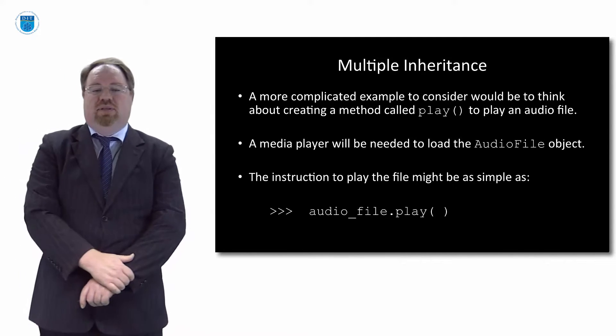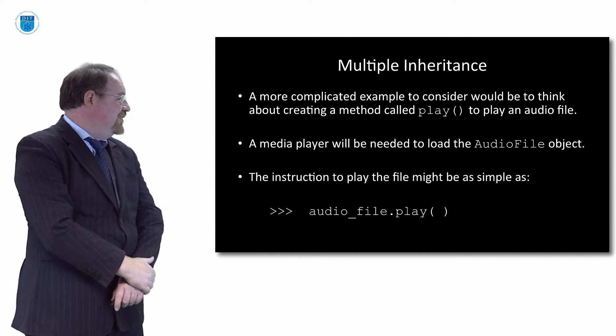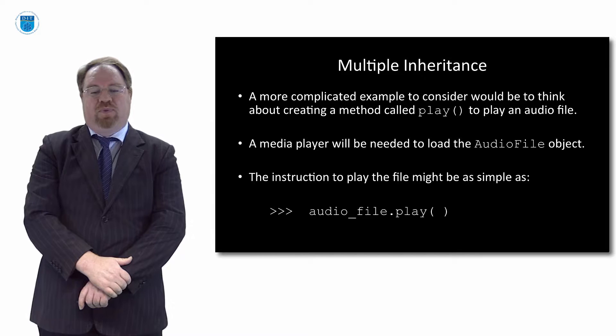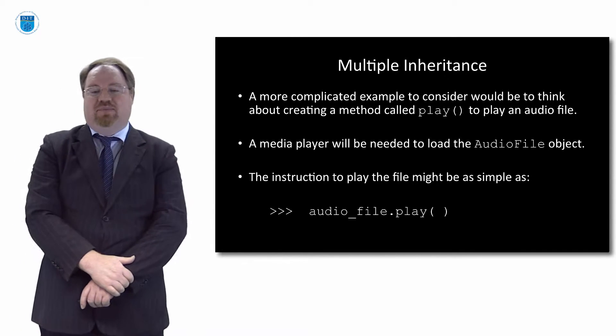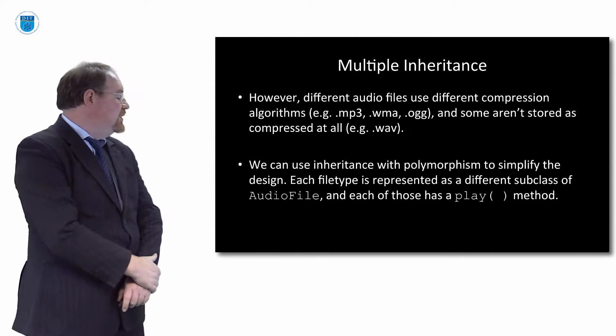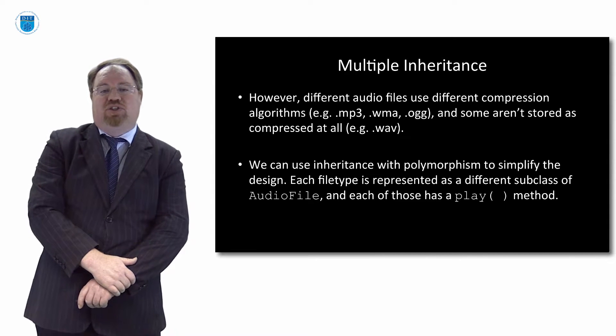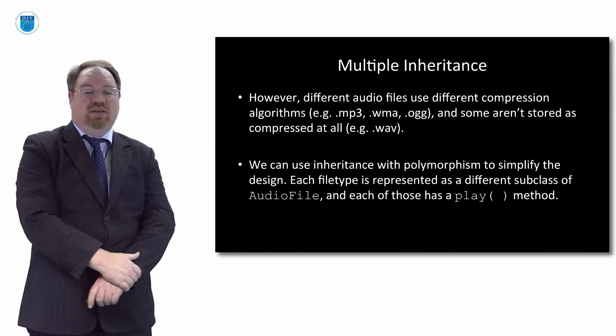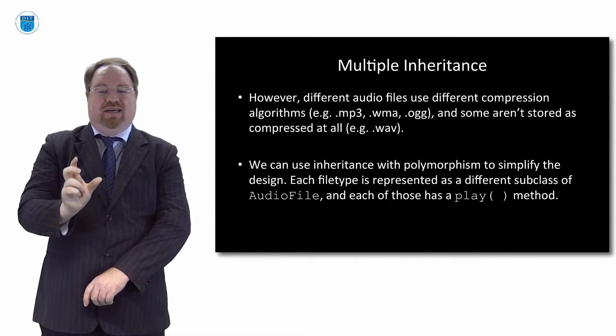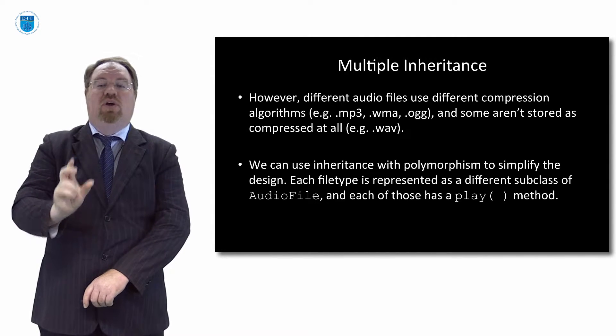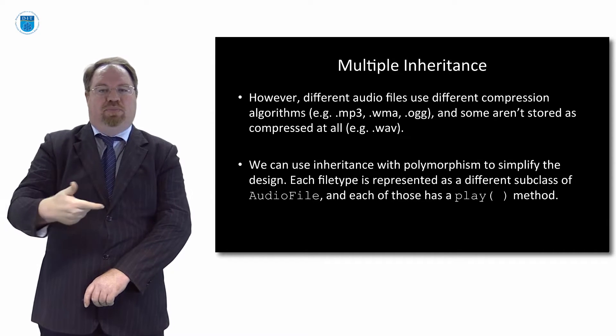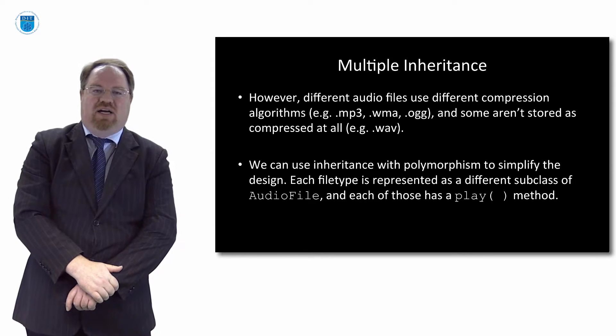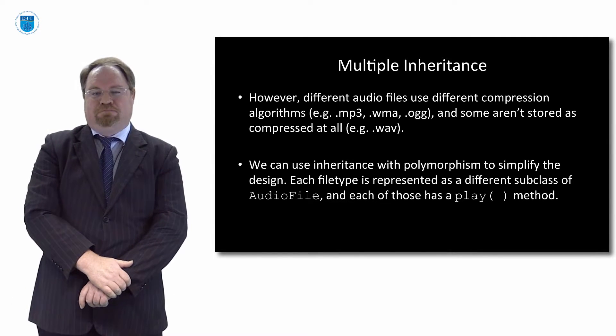Let's look at a different example. So not necessarily more complicated but possibly more relevant. If we wanted to create a method called play that would play any audio file, and we had a generic audio file type called audio file. The instruction to play might be something like a particular audio file.play. Now I'm sure we know this, that different audio files have to be played by different players or at least have different compression algorithms. So MP3s and WMAs and OGG files have different kinds of compression algorithms, and WAV files have no compression at all. So if I had a play method to play an audio file, it would have to know what type of file this is, and then use the appropriate player and use the appropriate decompression algorithm to play it. So it's the same method name play, but for different file types, we should use different approaches to playing the file.